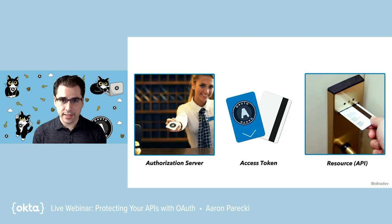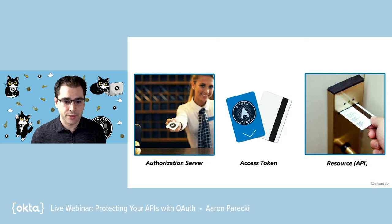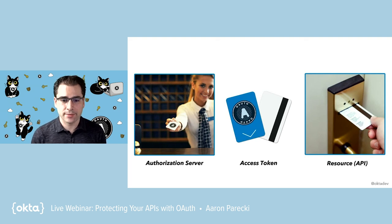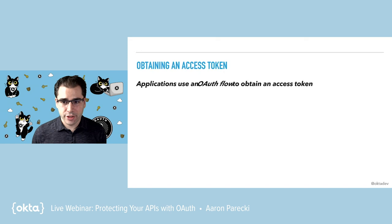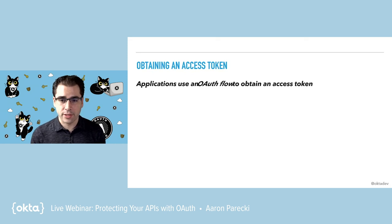That is exactly analogous to an access token in OAuth, where it is technically possible that an access token doesn't even represent a user. In OAuth terminology, applications use an OAuth flow to get an access token, and which flow they use depends on what kind of app it is — things like where it's deployed and other properties. I normally cover this in a different session where we focus on OAuth clients, but I do want to talk about the most common one: the authorization code flow, which is for web apps as well as native apps. There's also the device flow, the password grant (which is getting deprecated), and client credentials when there's no user involved.